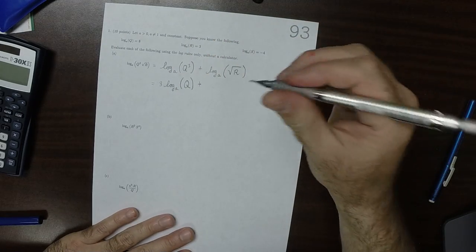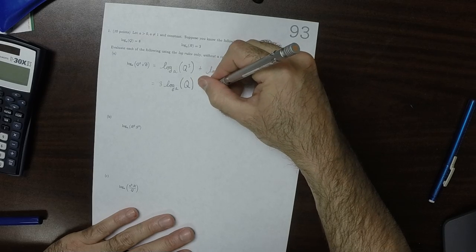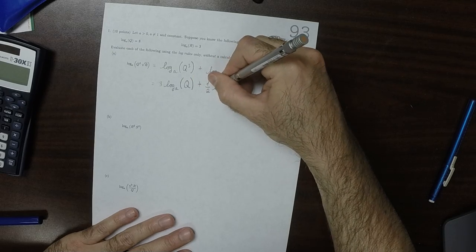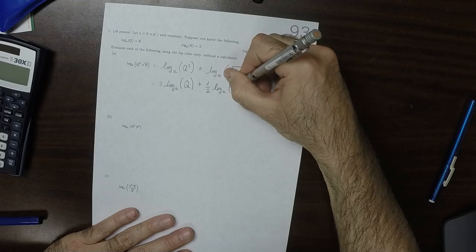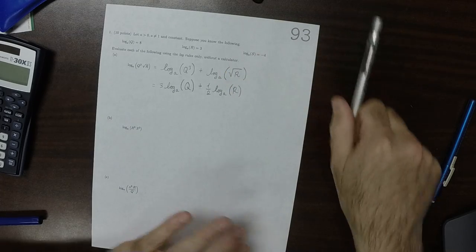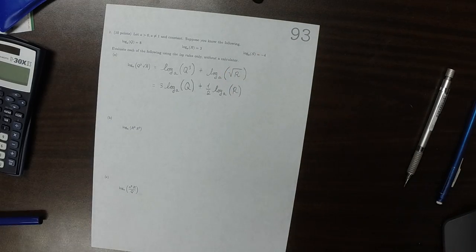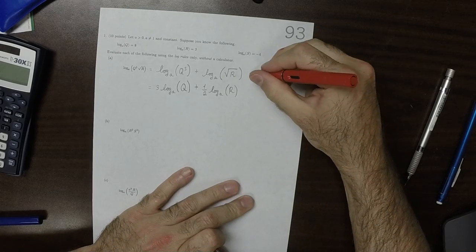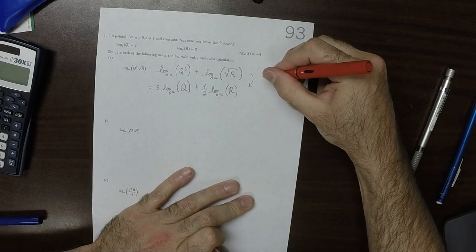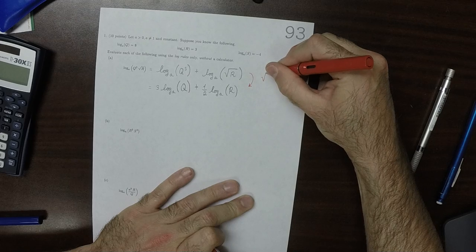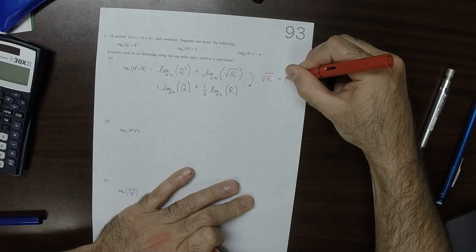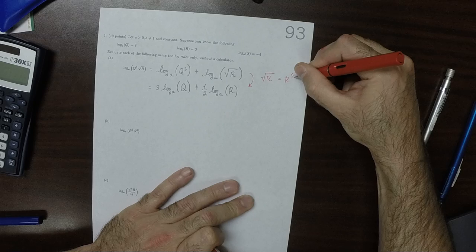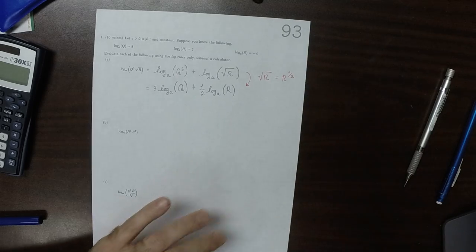And then remembering that square root is fractional exponent half, that'd be half log base a of r. And what was used in that step is that square root r is r to one-half.